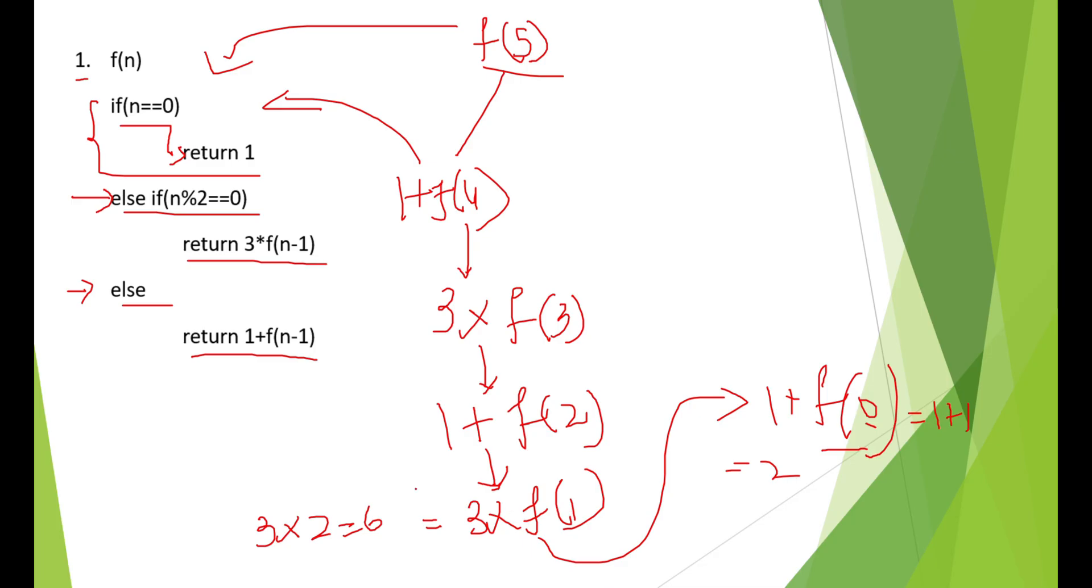You will again go back here. The value of f of 2 is nothing but 3 into f of 1. We got the value of 6. When you backtrack, this equation becomes 1 plus 6. You have to do nothing. Just substitute the value, previous value into the next function.